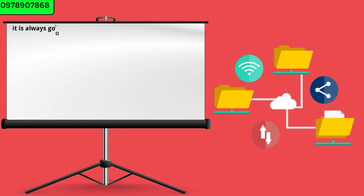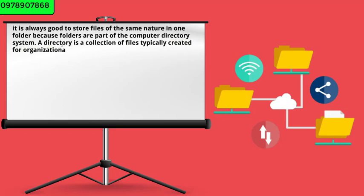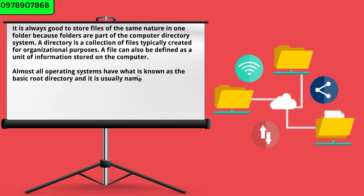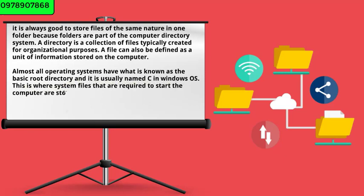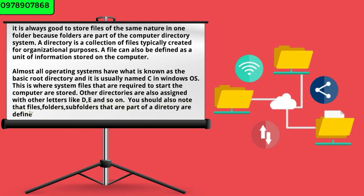It is always good to store files of the same nature in one folder because folders are part of the computer directory system. A directory is a collection of files typically created for organizational purposes. Almost all operating systems have what is known as the basic root directory, and it is usually named C in Windows OS. This is where system files required to start the computer are stored. Other directories are also assigned letters like D, E and so on. Files, folders, and subfolders that are part of a directory are defined by paths.